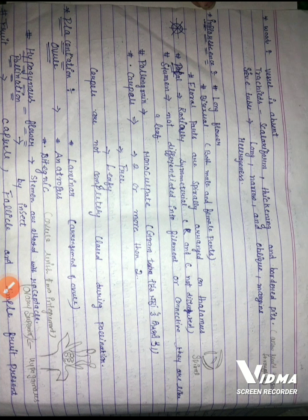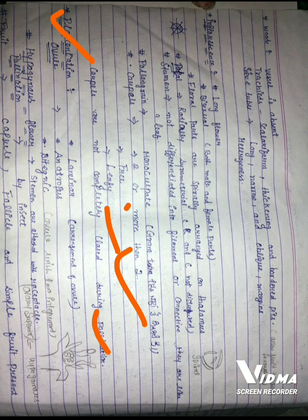Carpels are not completely closed during pollination. Placentation is laminar — the arrangement of ovules is laminar. The ovule is anatropous and bitegmic. Flowers are hypogynous and stamens are attached separately.